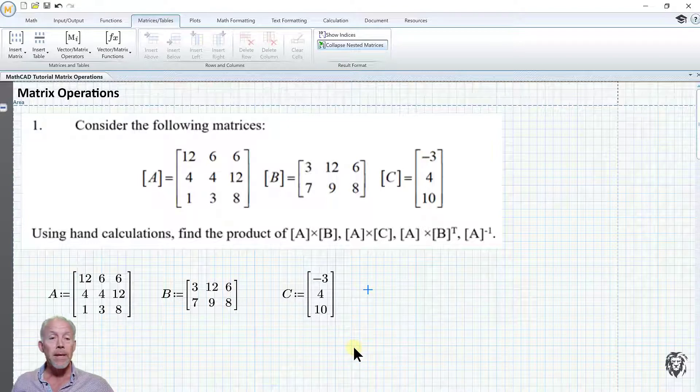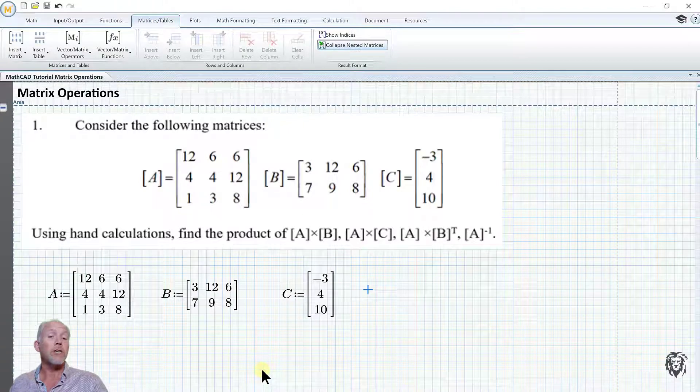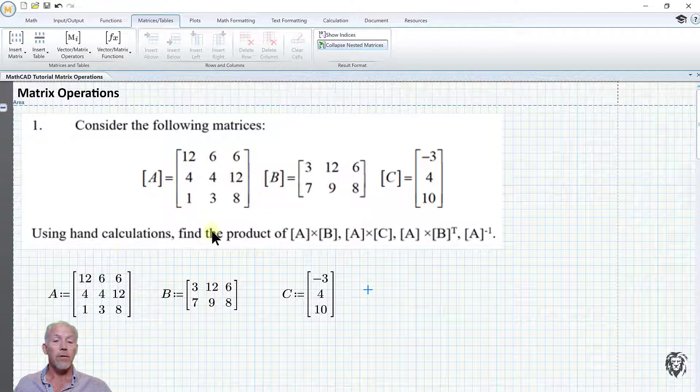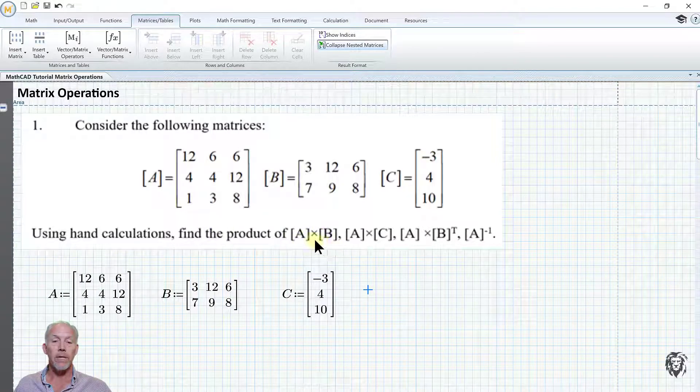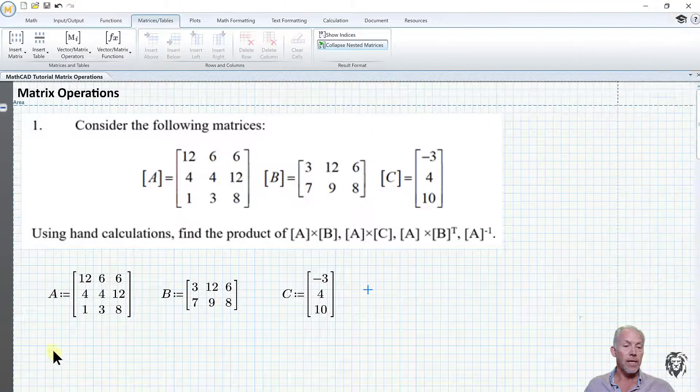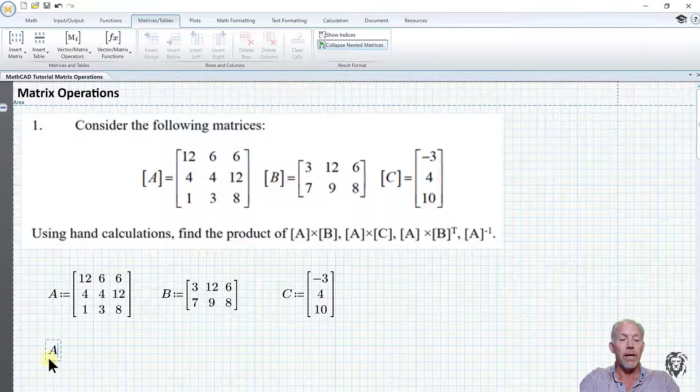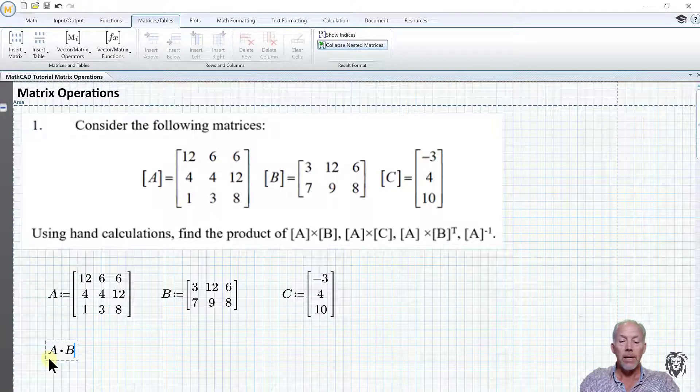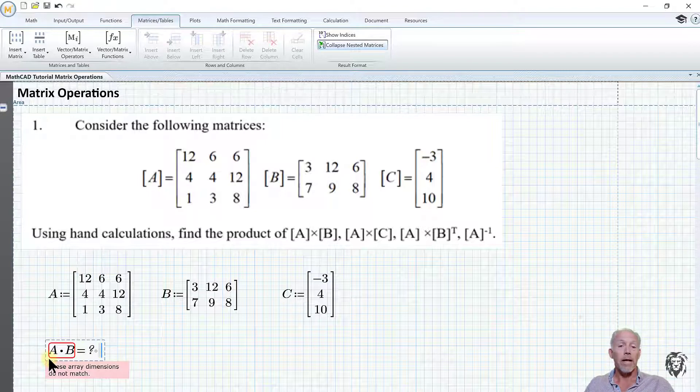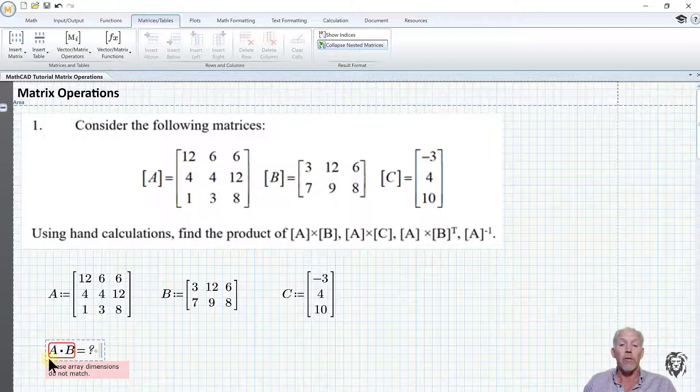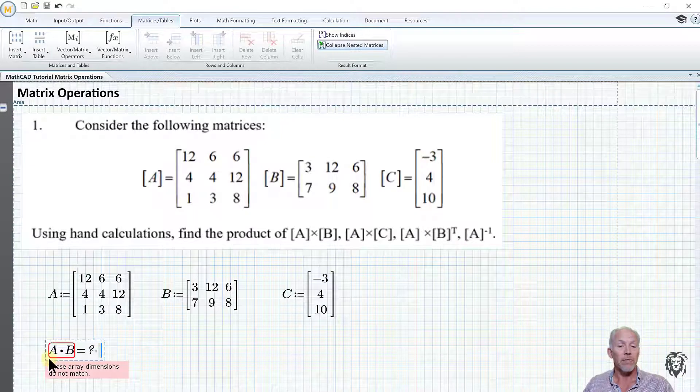This is where it gets easy. There are no secrets or real tricks within MathCAD like there was in Excel. Going through these problems in order, the first one is A times B. So A multiply B, hit my equal sign, and it comes up with an error. Those two matrices aren't compatible for multiplication because their orders aren't appropriate. If this is an assignment, you're going to make a comment as to why that is.